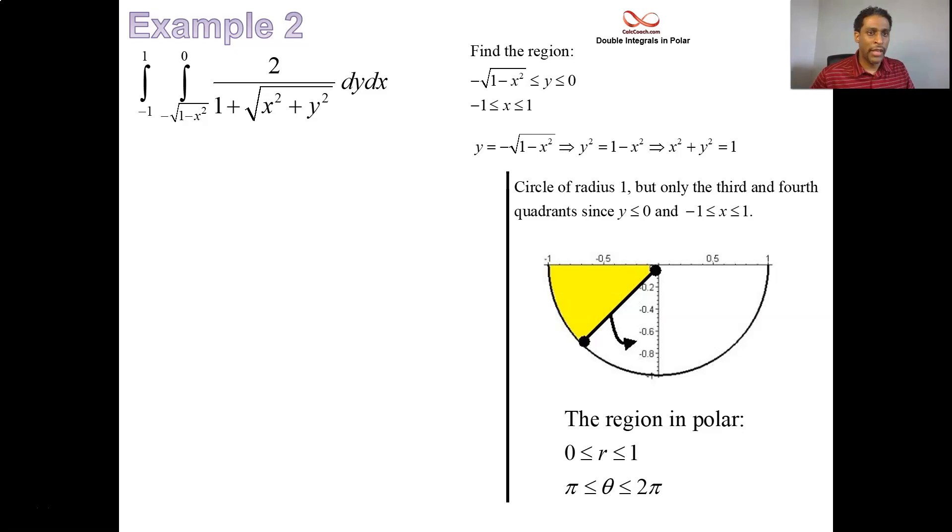Now let's go back to the integral and do our converting of the inside. Now, the inside is going to be 2 over 1 plus r. x squared plus y squared is r squared, but there's a square root there. And dy dx becomes r dr d theta. We have our bounds. Let's go ahead and put it together.